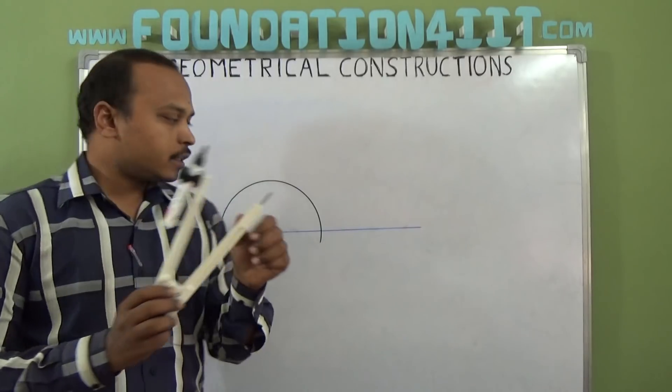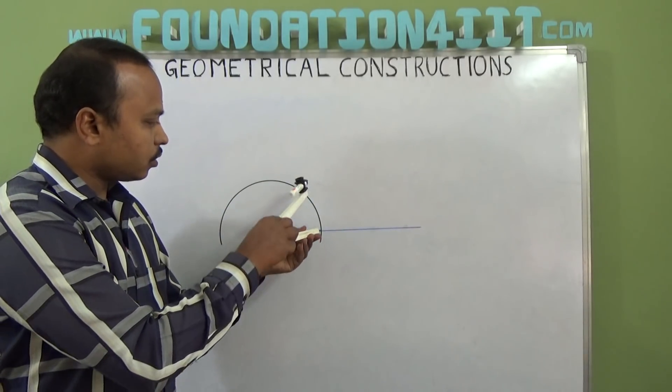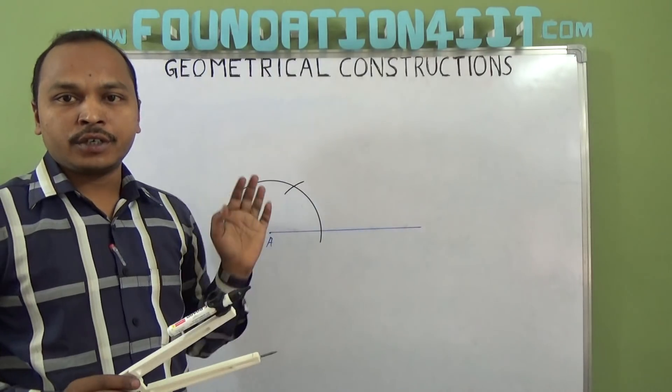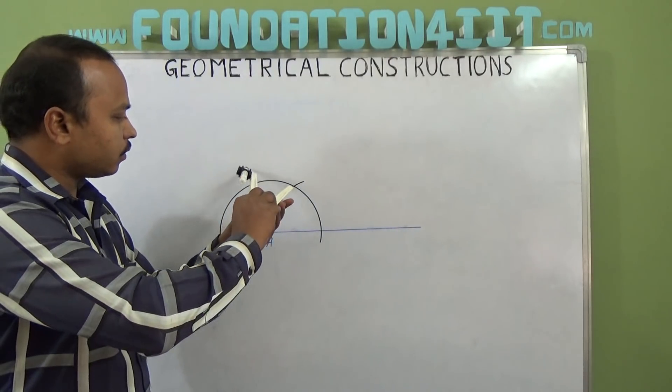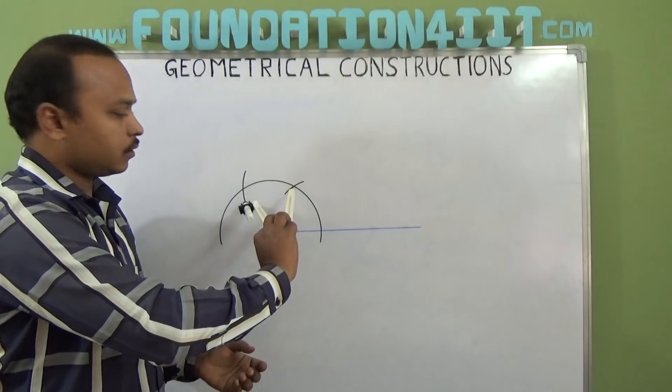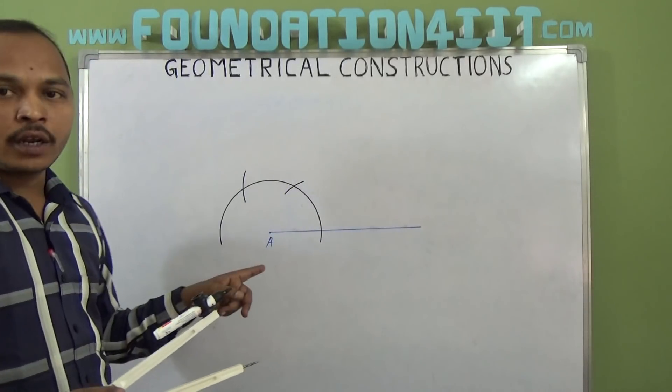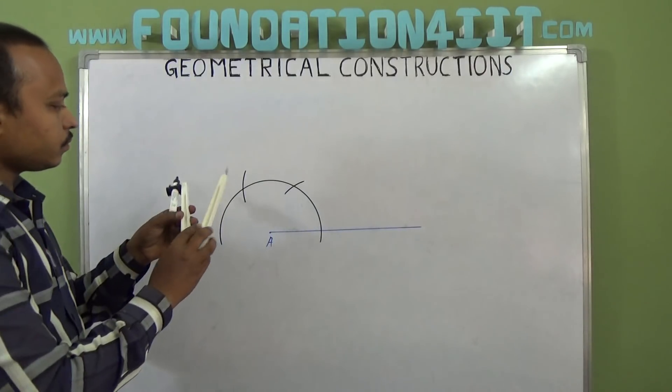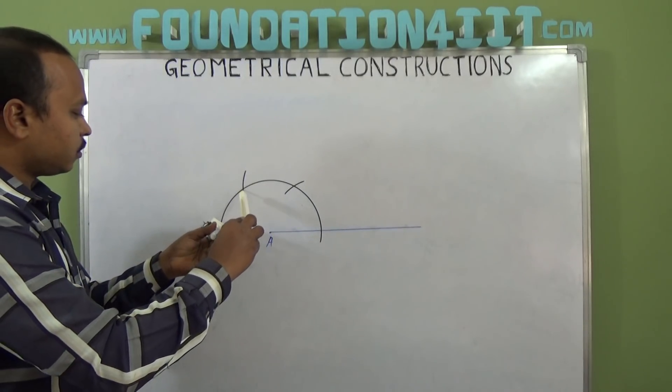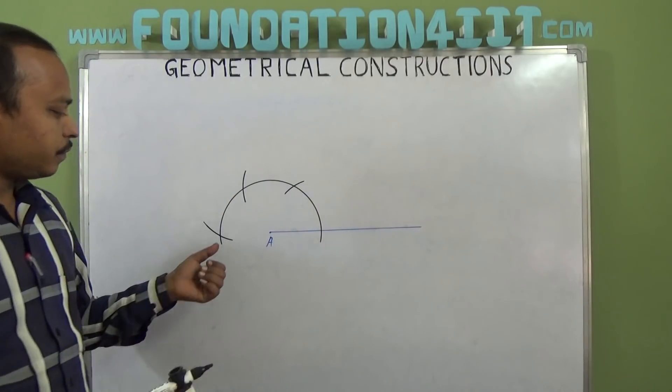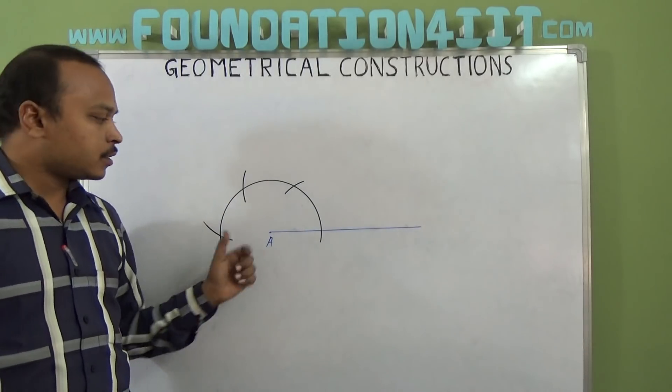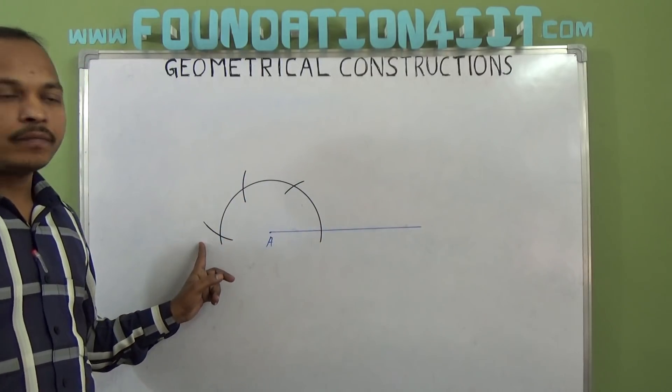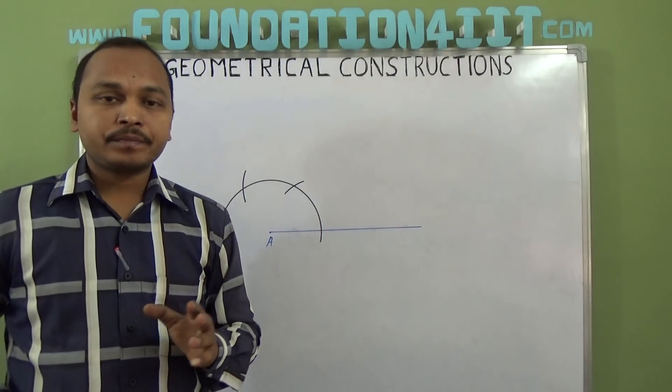Without changing this radius, from here cut one arc—that's 60 degrees. From here again, cut the arc. From here again, one more arc—up to here is 120 degrees. Again from here, if you cut, this is 180 degrees. So 0, 60, 120, 180. Now we need 45.